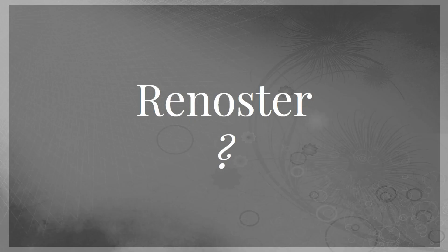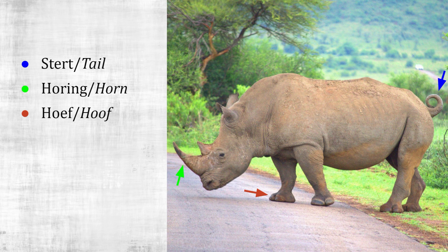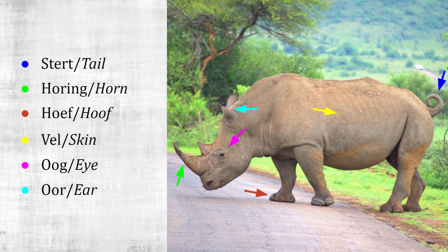Renoster. Can you remember what this animal is called in English? Start — tail. Warring — horn. Hoof. Val — skin. Oog — eye. Oor — ear.